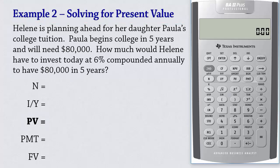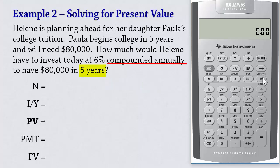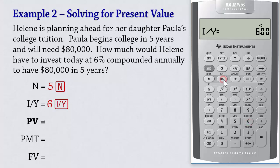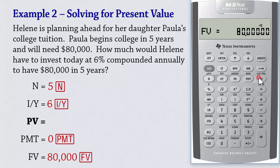We begin by clearing the TVM entries by pressing 2nd Clear Time Value of Money. Since the duration is 5 years and interest is compounded annually, we input 5 for N. For the 6% interest rate, we press 6 IY. Since there are no recurring payments, we input 0 PMT. For the future value, we enter 80,000 FV and then compute present value, which gives 59,780.65.